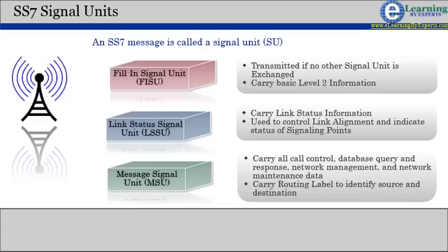and network maintenance data. MSUs have a routing label which allows an originating signaling point to send information to a destination signaling point across the network.